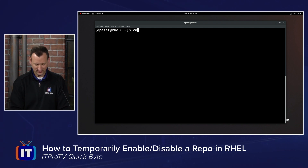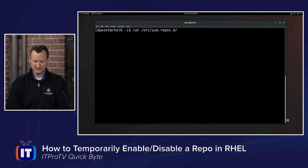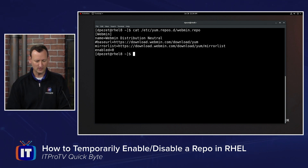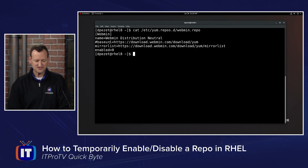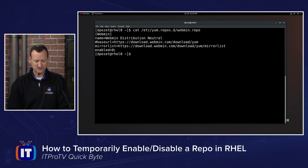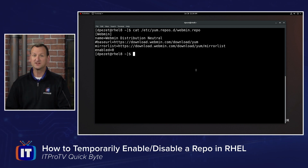I'm going to show you an example here. I have a repository defined in /etc/yum.repos.d/webmin.repo. That repository has an identity of webmin, and you'll notice right here that the enabled status is zero — it's turned off.